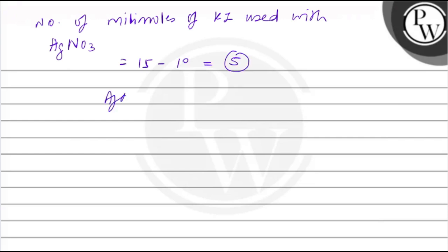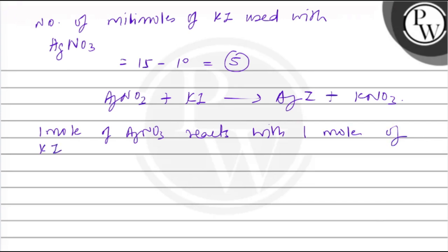As we know, AgNO3 plus KI, 1 mole of AgNO3 reacts with 1 mole of KI.